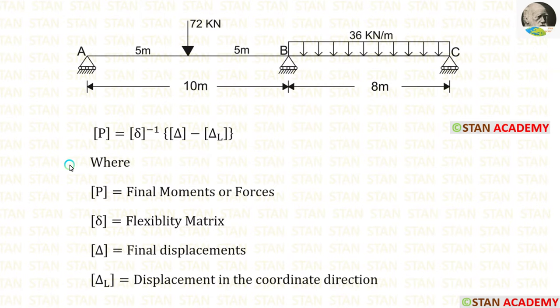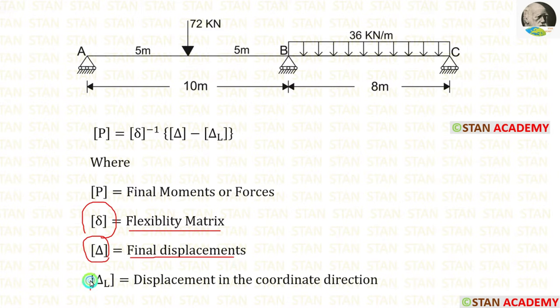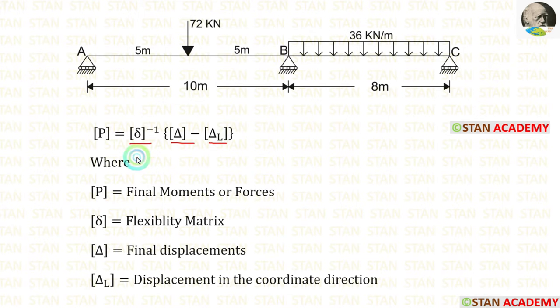Now let us see the formula to calculate the final moments. P matrix equals delta matrix inverse into (delta matrix minus delta L matrix). Here, P matrix is the final moments or forces, delta matrix is the flexibility matrix, delta matrix is the final displacements, and delta L matrix is the displacement in the coordinate direction. This is the easiest formula. If we calculate these three values, we can calculate the final moments. First, let us find the delta L matrix.